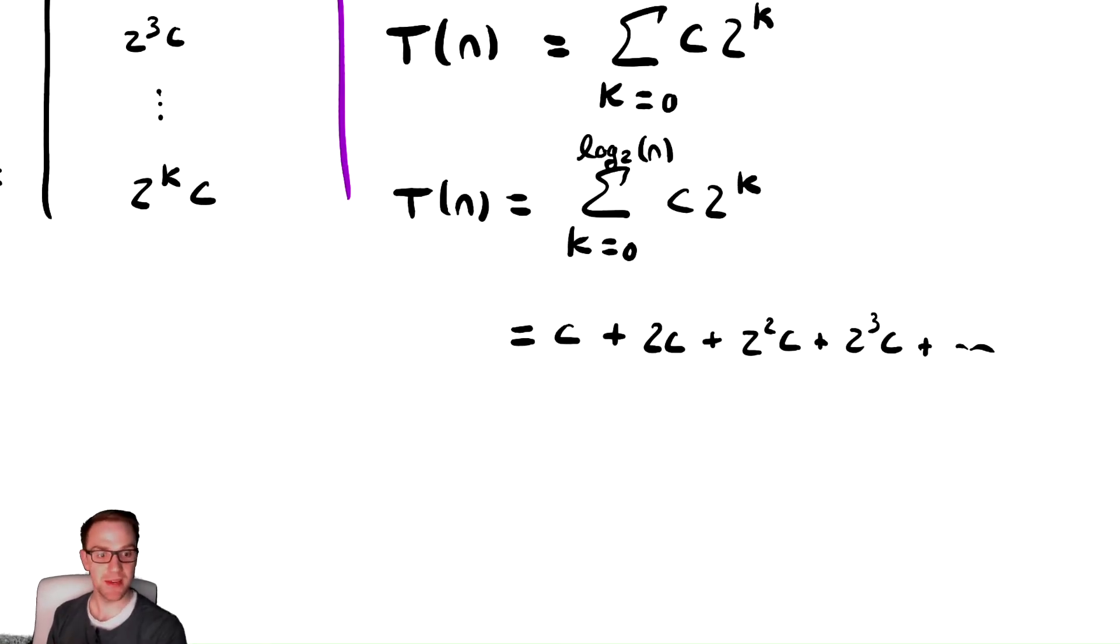So, this seems to be a valid way to express the running time, and now we just have a summation to analyze. Having built the summation, we are now done with the while loop effectively, we just need to analyze the summation, which is exactly what we've been doing for several weeks now.